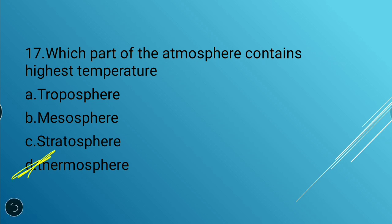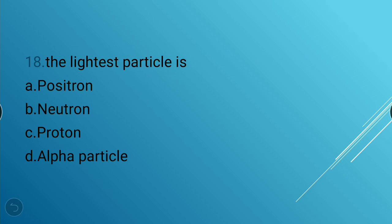Next question: The lightest particle is — positron, neutron, proton, or alpha particle. The answer is option A — positron is the lightest particle.